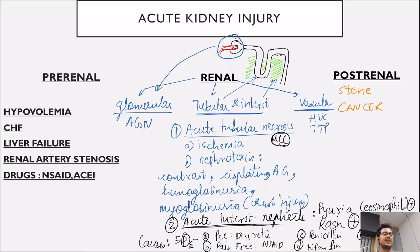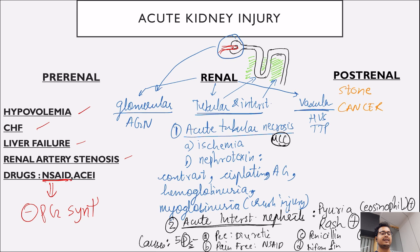Let us now jump into the causes of each. Pre-renal causes are hypovolemia, congestive heart failure, liver failure, renal artery stenosis, and NSAIDs. NSAIDs basically inhibit prostaglandin synthesis, so efferent arterioles are unable to dilate, resulting in decreased blood supply and pre-renal failure.